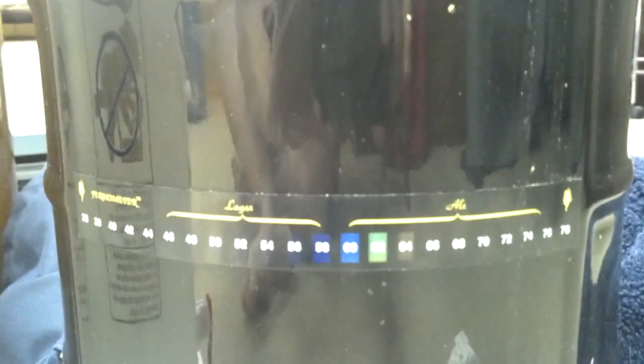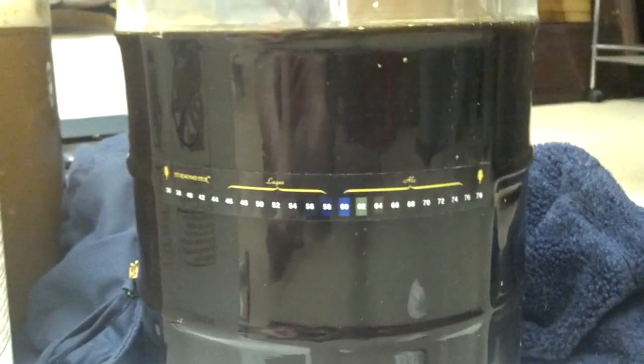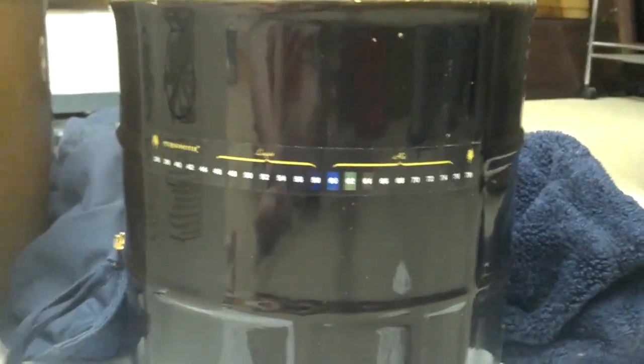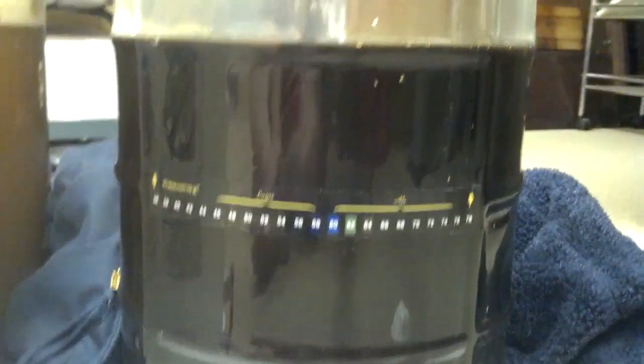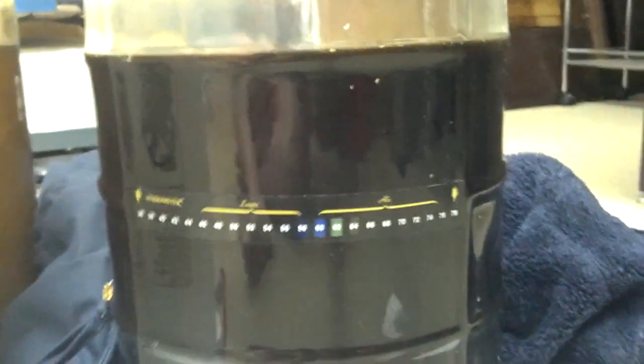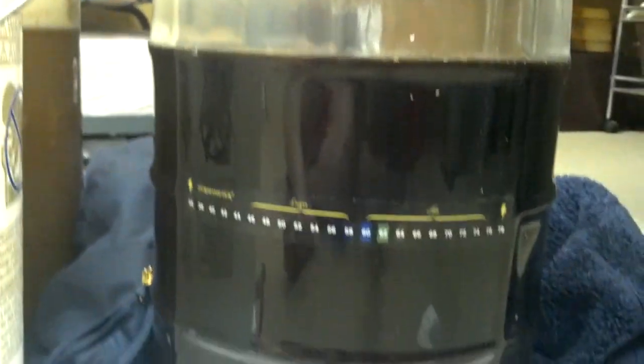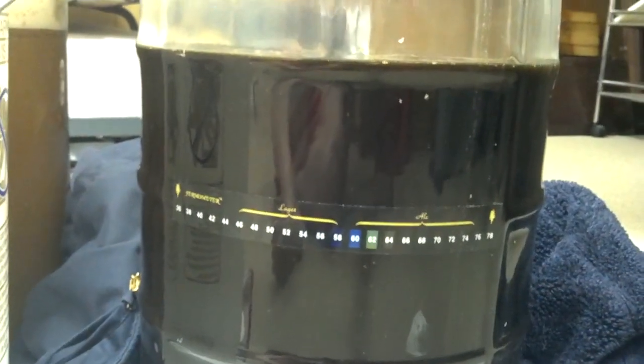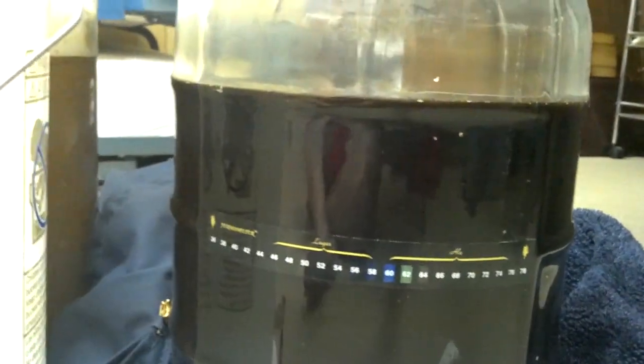Let me see if I can strain that out. Yeah, so that's somewhere in the 62 degree range. But unfortunately, it fermented hot and I probably can't do anything about it now. It fermented at like 72, I think, for the first couple, first day or so. Unfortunately, I didn't cool it down enough.